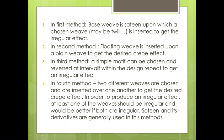In the third method, a simple motif is chosen and reversed at intervals within the design repeat to get an irregular effect. We decide a very small geometrical motif pattern and then reverse it. The original motif and the reversed motif together form one unit in the design repeat, and this complete unit is repeated across the fabric to give an irregular effect.